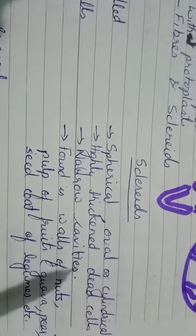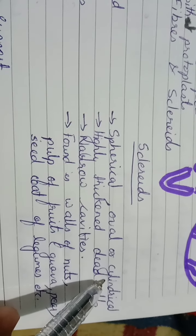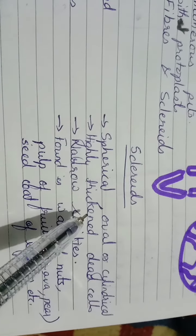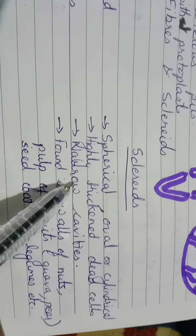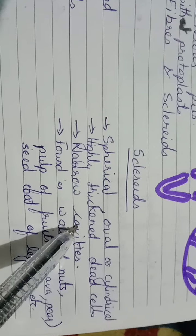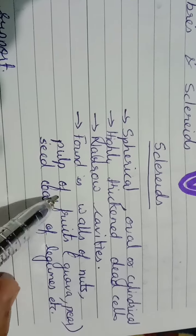Sclereids are normally spherical, oval, or cylindrical in shape, which are highly thickened - that means lignin deposition is there. They have narrow cavities compared to fibers and are mainly found in the walls of nuts, pulp of fruits like guava and pear, seed coat of legumes, etc.